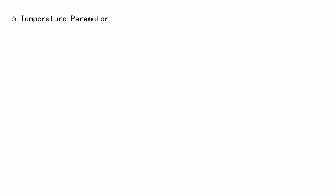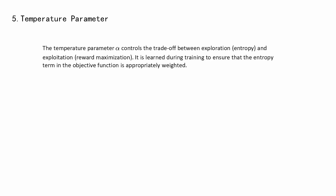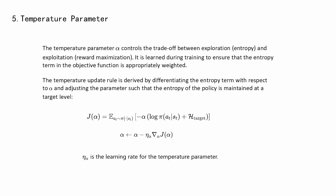Temperature Parameter Alpha: The temperature parameter alpha controls the trade-off between exploration, or entropy, and exploitation, or reward maximization. It is learned during training to ensure that the entropy term in the objective function is appropriately weighted. The temperature update rule is derived by differentiating the entropy term with respect to alpha and adjusting the parameter such that the entropy of the policy is maintained at a target level.